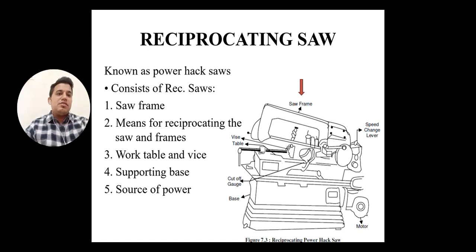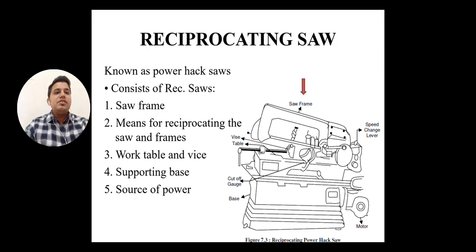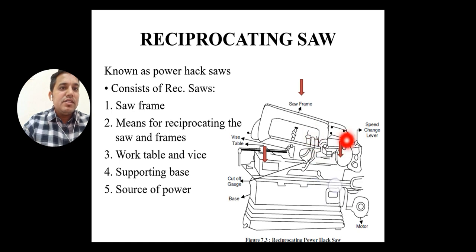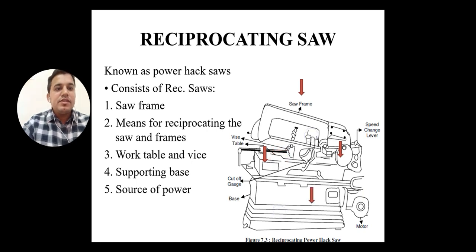The main components of the reciprocating sawing machine are: first, the saw frame, which mounts the sawing strip. Second is the reciprocating arm, which is rotated by the motor for reciprocating the saw and frame. Third is the work table and vice, used for holding the workpiece. Fourth is the supporting base.